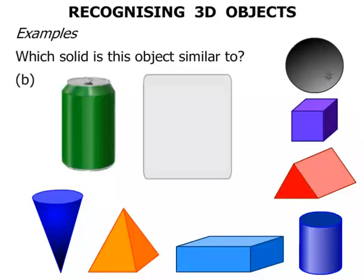The next one we've got is a soft drink can. Looking at the solids, which one do you think? This time, the cylinder.